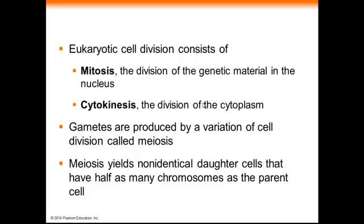Eukaryotic cell division consists of mitosis, which is the division of the nucleus or the genetic material, and then cytokinesis, which is the division of the cytoplasm or the rest of the cell. Gametes are produced by meiosis, and somatic cells are produced by mitosis. In meiosis, the daughter cells are not genetically identical to the parent cell, and they also have half as many chromosomes — we'll spend more time on that in a later chapter.